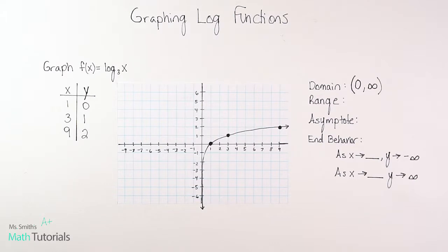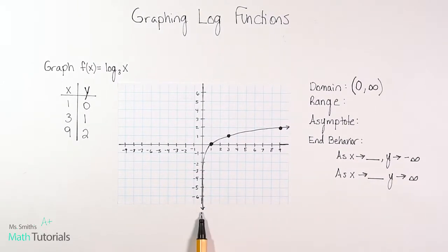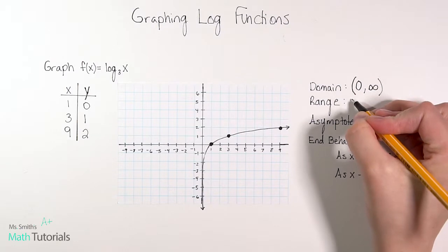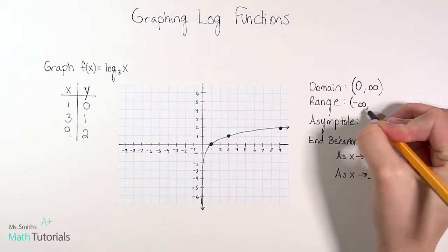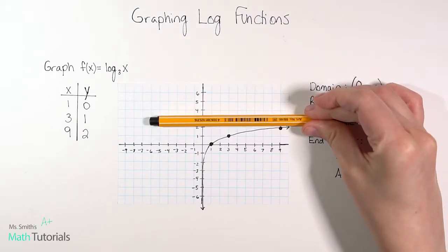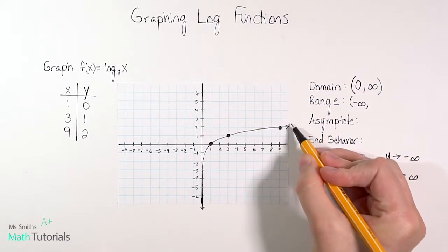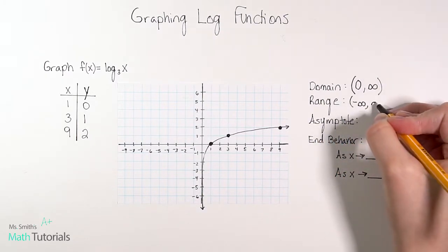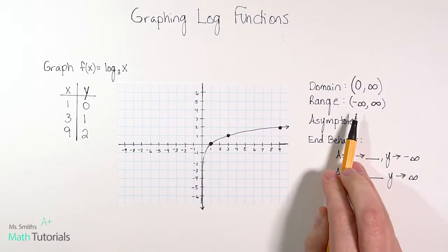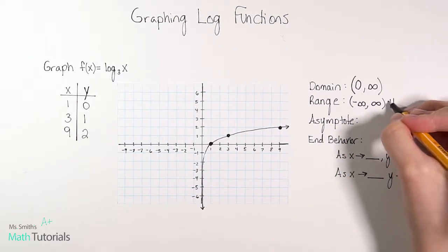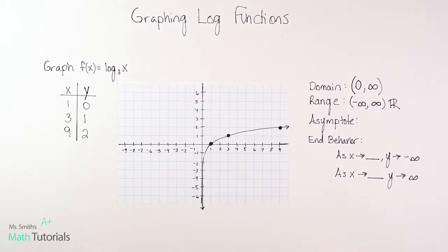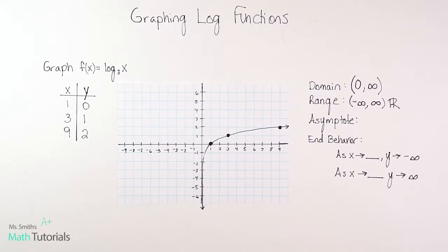For range, remember range is our y values from the bottom through the top. When I come up from the bottom the first place I hit is an arrow going down, so we call that negative infinity. When I come down from the top I also hit an arrow going up forever — we call that positive infinity. So the range is negative infinity to positive infinity, which is another way of saying all real numbers. If you're confused on domain and range, stop and review my video on interval notation for domain and range.